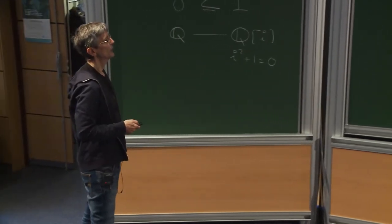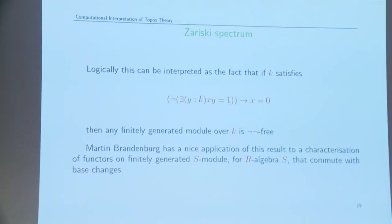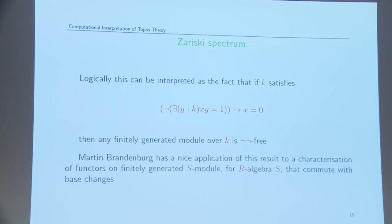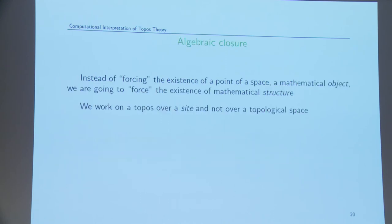Martin Brandenburg has a really nice application of this lemma. That was the application of sheaf models: one application is that you can force the existence of elements by changing the base topos, and the other application is that if you look at logical properties that objects satisfy in sheaf models, you can exploit this and get nice proofs.